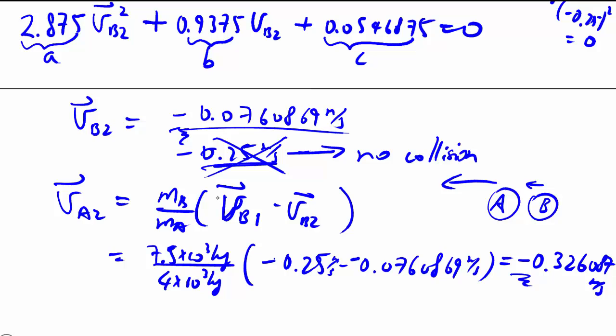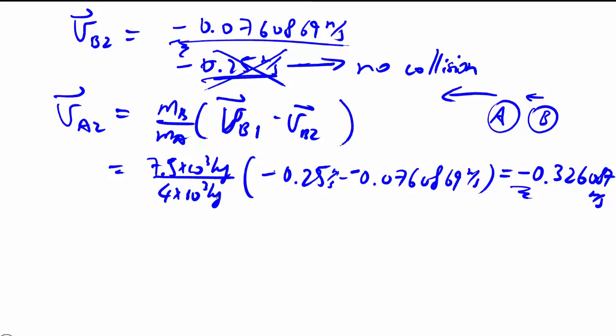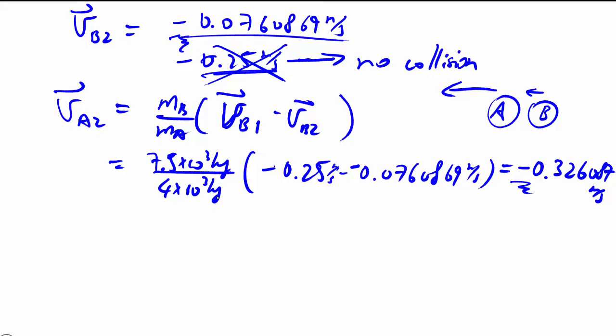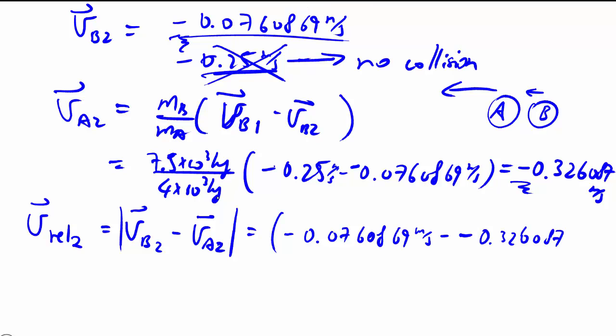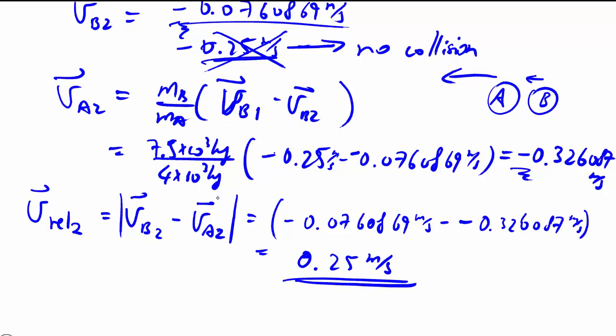So B being heavier, A bounced off of B but B keeps on moving with a little bit of a slowdown. But that's not the final end of the question. They specifically want the relative velocity afterwards which we can take as the absolute value of VB minus VA which ends up quite simple but we do have to go through all the steps to find it. So this here 0.25 meters per second is the relative velocity after the collision.